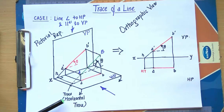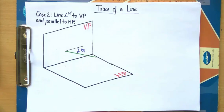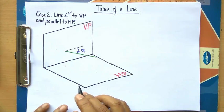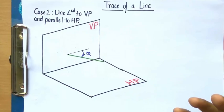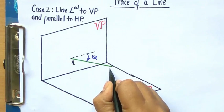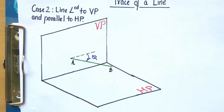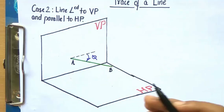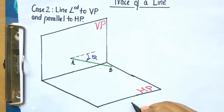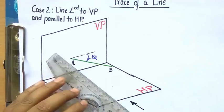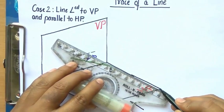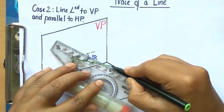That's the horizontal trace. Let's move on to case number two, in which I'll be discussing the vertical trace. In case two, on producing the line you will find that it intersects the vertical plane at a certain point. The line AB here is inclined to the vertical plane and is absolutely parallel to the horizontal plane. We are going to look at this line from two different ways. Looking from the front, on producing this line it meets the horizontal plane somewhere here.